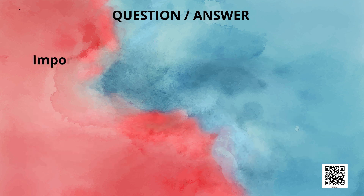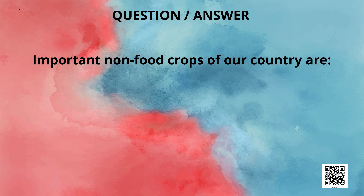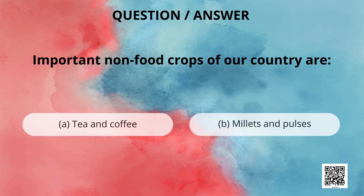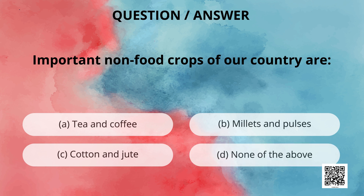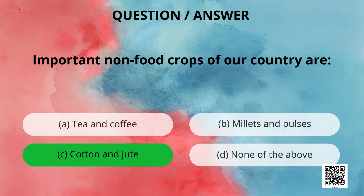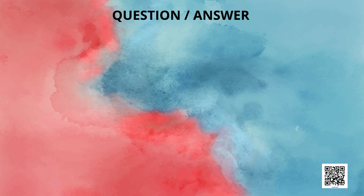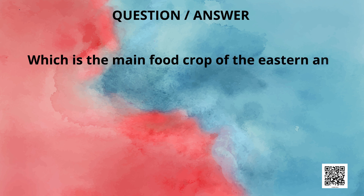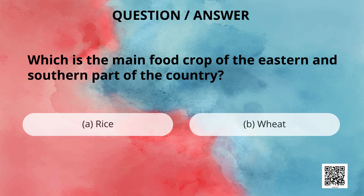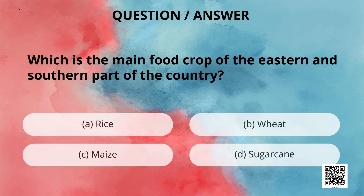Very good going. Important non-food crops of our country are tea and coffee, millets and pulses, cotton and jute, or none of the above? Yes, it is cotton and jute. Last question: which is the main food crop of the eastern and southern part of the country — rice, wheat, maize or sugarcane? Yes, the main food crop of the eastern and southern part of the country is rice. Hope today's session was fruitful for you. We'll be back with part two of this video pretty soon. Till then, stay safe, stay healthy and keep studying. Namaskar.